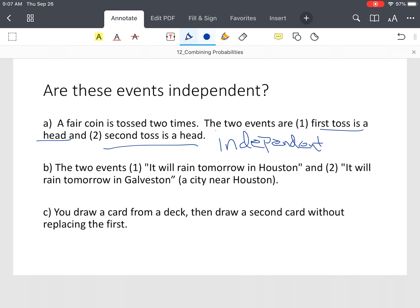Alright, so example B, you've got two events. First event is, it will rain tomorrow in Houston. The second event is, it will rain tomorrow in Galveston, a city near Houston. Now, just because it's raining in Houston doesn't mean it's raining in Galveston. So, again, this is what you call independent. So the events are independent.